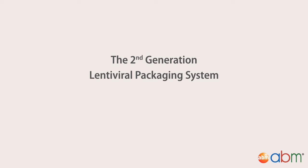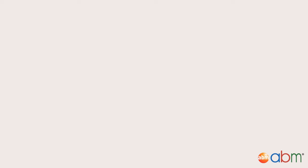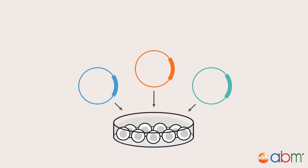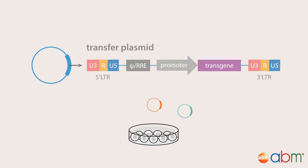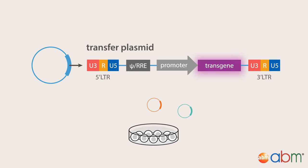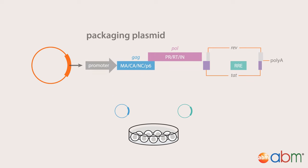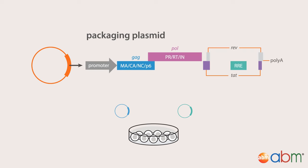The second generation system splits the essential components of the lentiviral system across three plasmids that are delivered separately for safety. The transfer plasmid encodes for the transgene. It also contains cis-acting elements such as the 5' and 3' LTRs essential for promoting RNA polymerase 2 to begin transcription of viral mRNA, and the psi sequence which signals genome packaging. The packaging plasmid is provided in trans and encodes only essential trans-acting genes that are required for entry and integration of the viral genome.